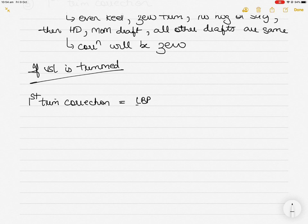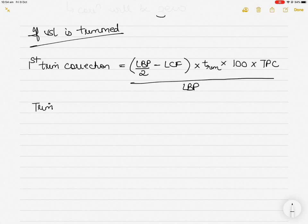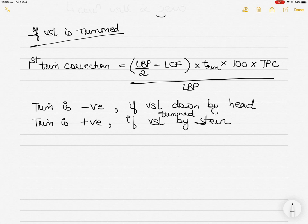The first trim correction formula is: (LBP ÷ 2 − LCF) × trim × 100 × TPC ÷ LBP. Here, trim is negative if the vessel is down by head and positive if down by stern. If the stern draft is greater, the trim correction will be positive.